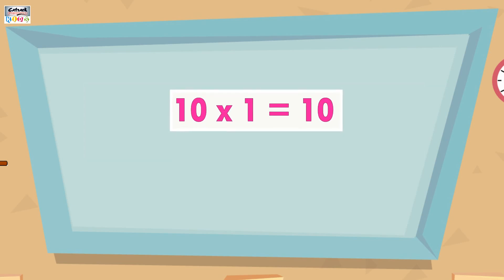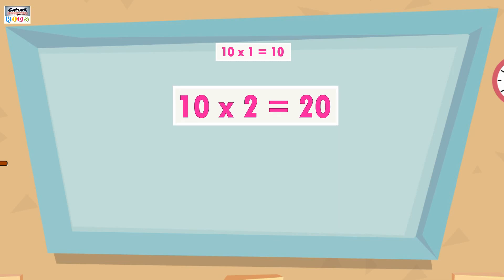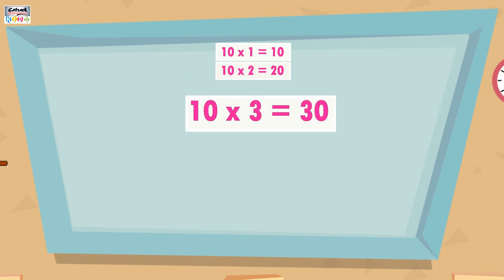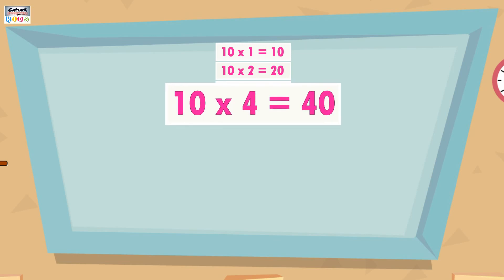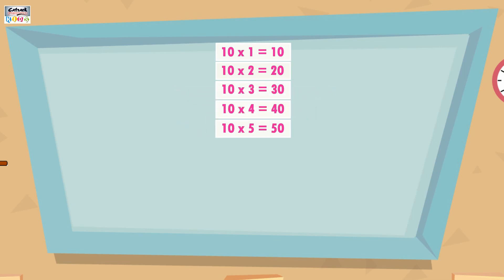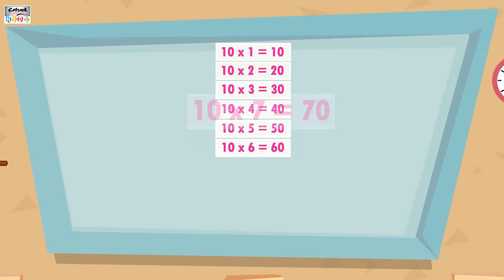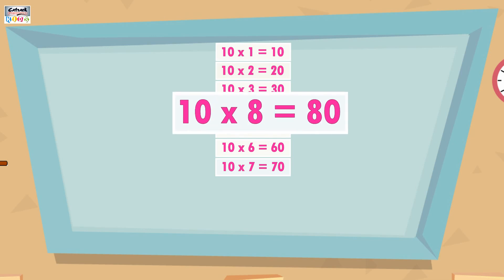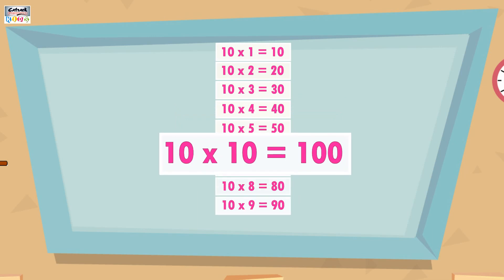Ten ones are ten, ten twos are twenty, ten threes are thirty, ten fours are forty, ten fives are fifty, ten sixes are sixty, ten sevens are seventy, ten eights are eighty, ten nines are ninety, ten tens are hundred.